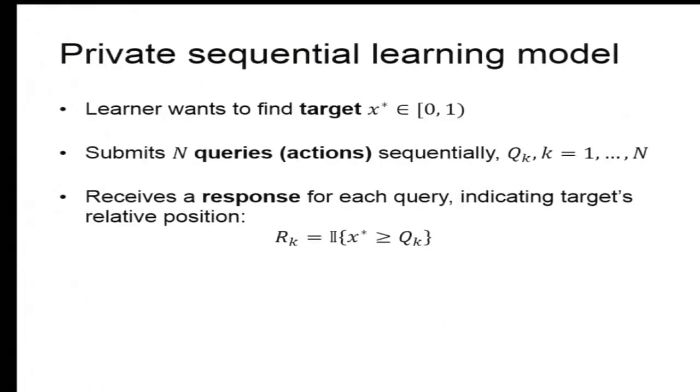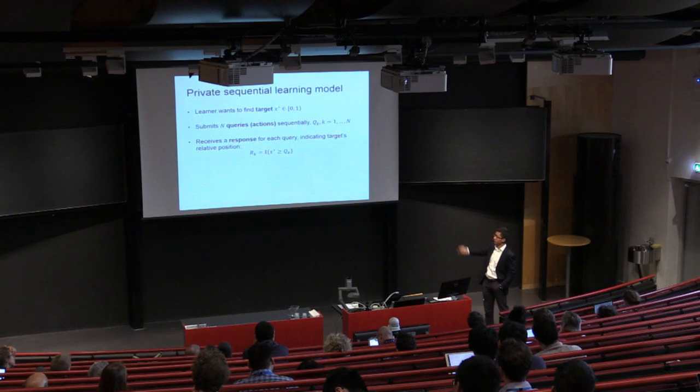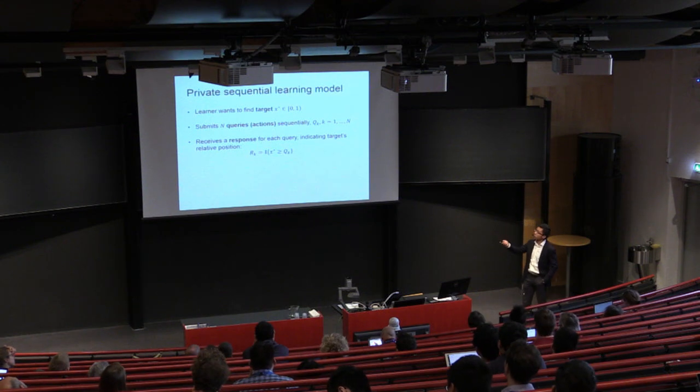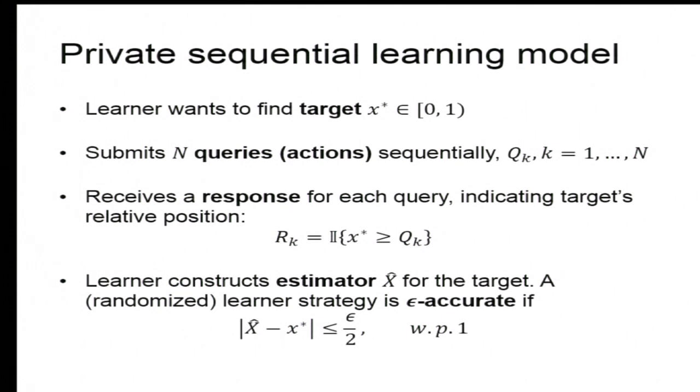Let's jump directly into the model. We call this the private sequential learning model. There's one learner who is trying to find a target, simply a scalar in a compact interval, 0 to 1. And she does that by submitting inquiries or actions in sequential fashion, call that qk as the kth query. Then for each query, a response is produced, simply saying whether the truth is to the left or not to the left of the set query. So it's an indicator function of x star being greater than or equal to qk. And finally, after n queries are submitted, the learner looks at all the responses and tries to produce the estimator x hat for the target. Potentially, this is a randomized algorithm. And we say the strategy is epsilon accurate if, with probability 1, I am within the epsilon ball of the truth. It's a very classical setup of learning using binary responses.